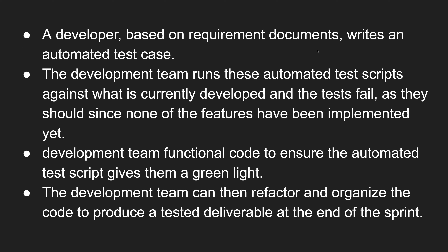This is the process of test-driven development. First, a developer, based on the requirement documents, writes an automated test case — he will not write the logic first. The development team then runs these test scripts and they all fail because none of the logic or features have been implemented yet. The development team then tries to implement those functions to make the test cases pass, writing functional code to ensure the automated test cases get the green light — meaning they pass.